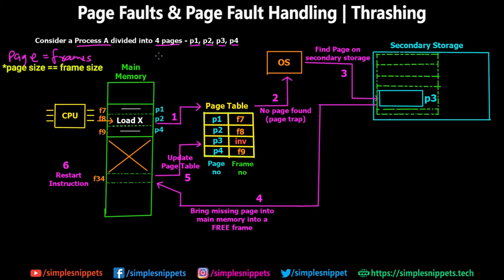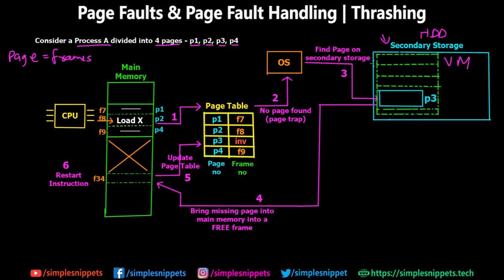So what happens in a page fault? A page fault happens when a desired page which is about to be executed or is required is not there in the main memory, but it is there in secondary storage or virtual memory. That's what paging helps us achieve — it creates some space in secondary storage which can be used to store some pages of certain processes if the main memory gets full, effectively expanding the main memory using virtual memory.